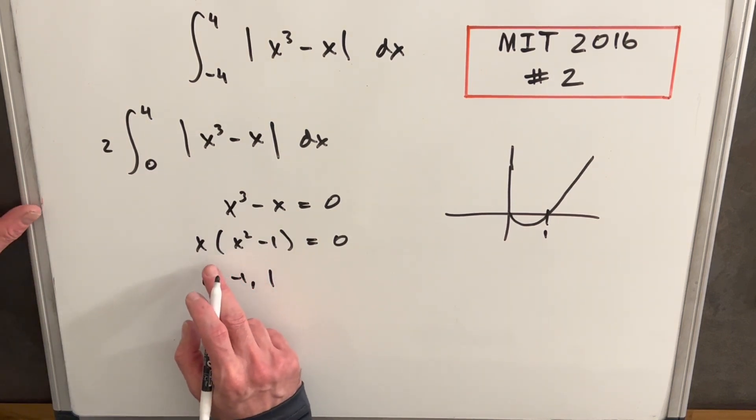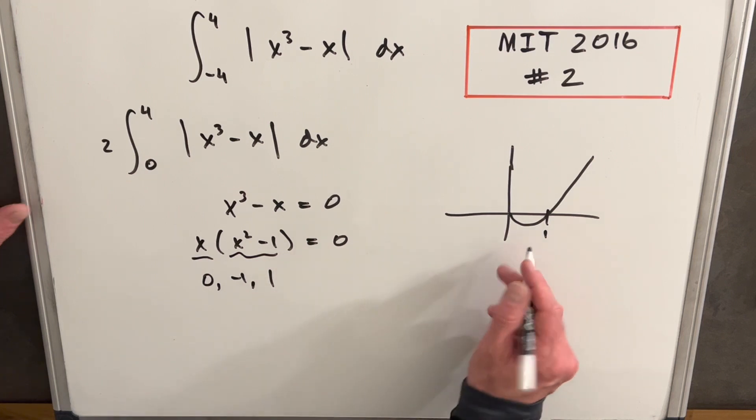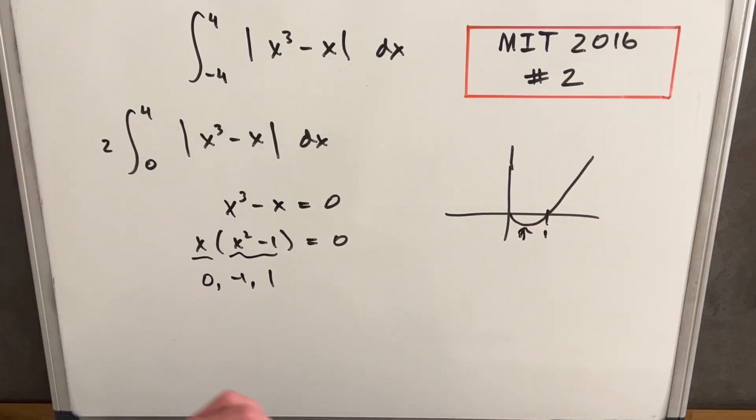And you can kind of notice just by inspection, if you plug in anything here between zero and one, this piece is going to be negative and this piece is going to be positive. So you're going to have a negative value in here.